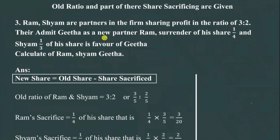Hey, welcome back to the series of Accountancy, Chapter 3: Admission of a Partner. In this video we are learning about a new situation — whenever the older partners' sacrificing ratio is given as a part of their share. If you go through this question you will get to know what type of question we are analyzing today. Let's start reading the question and then analyze and solve it.